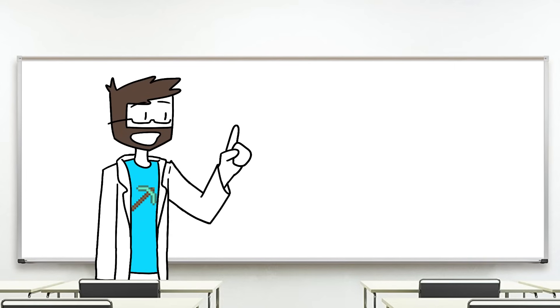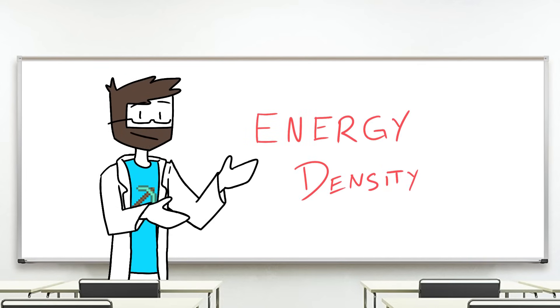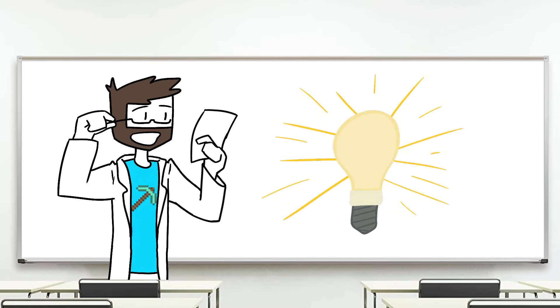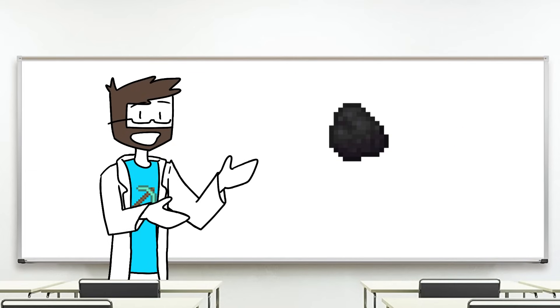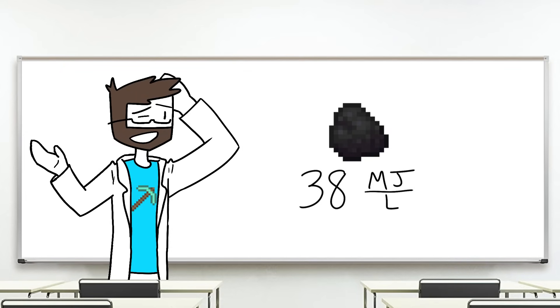To figure out how useful Redstone is as a power source though, we need to figure out its energy density. Energy density is how much energy is available for a given amount of material. For example, coal, one of the most widely used fuel sources today, has an energy density of around 38 megajoules per liter. Which, honestly, isn't that great.